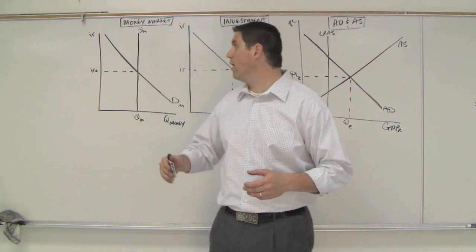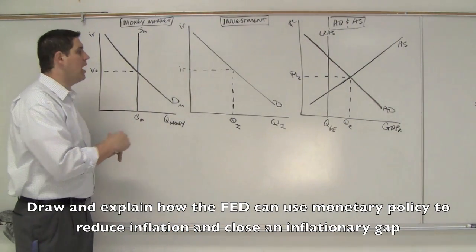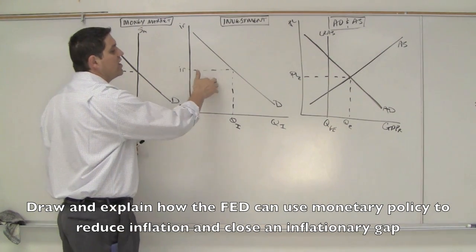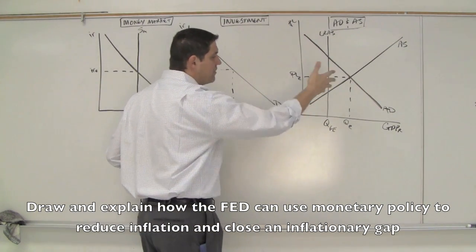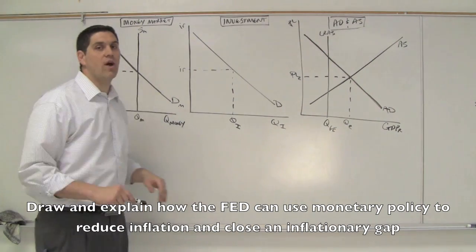What does the Fed want to do? Well, that's your job to show me. On this graph, the Fed is going to increase or decrease the money supply. That's going to change investment. Investment is a component of aggregate demand, and something's going to happen over here. Your job is to be able to explain what's going to happen. I want you to try it on your own. Good luck.